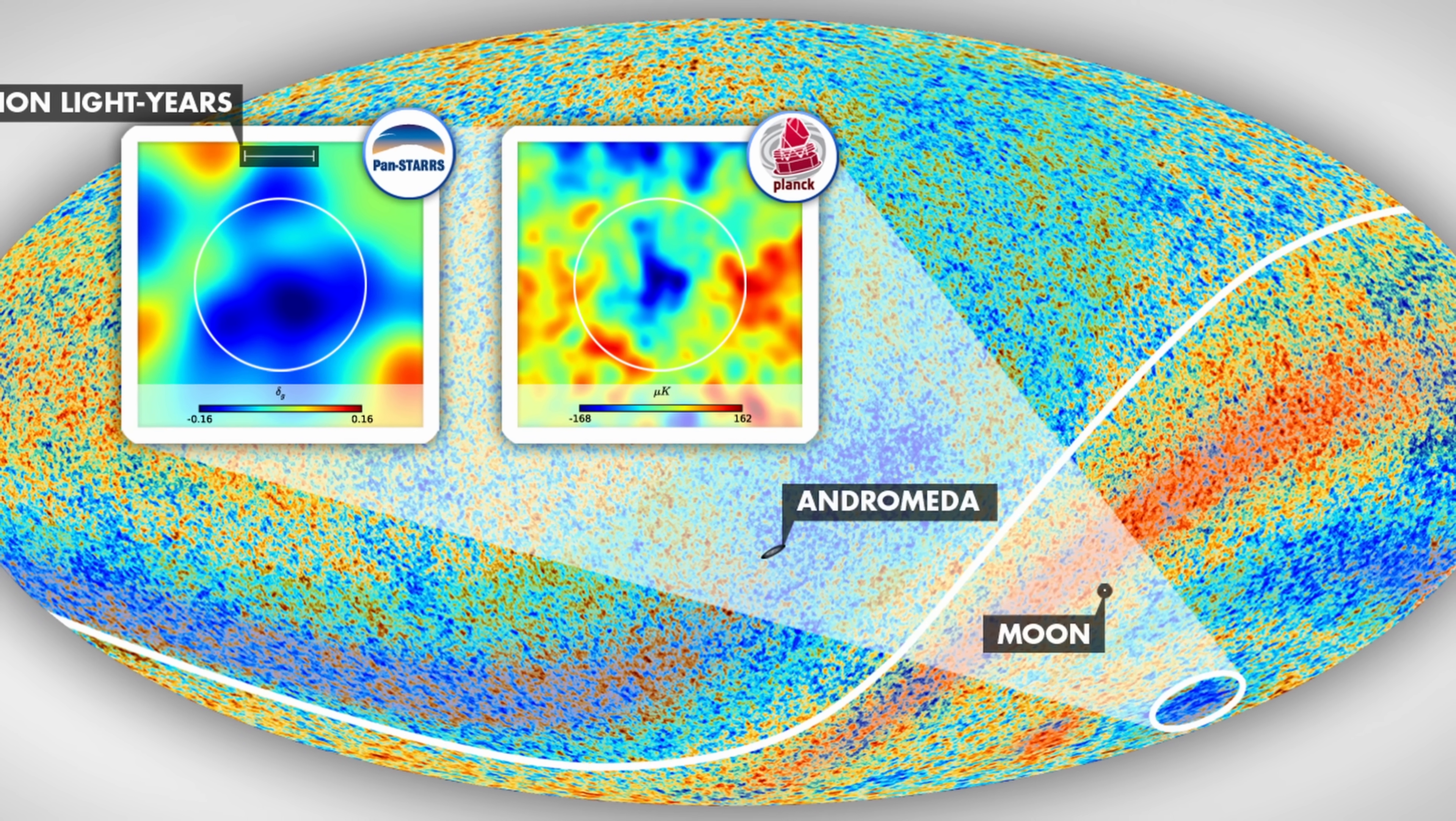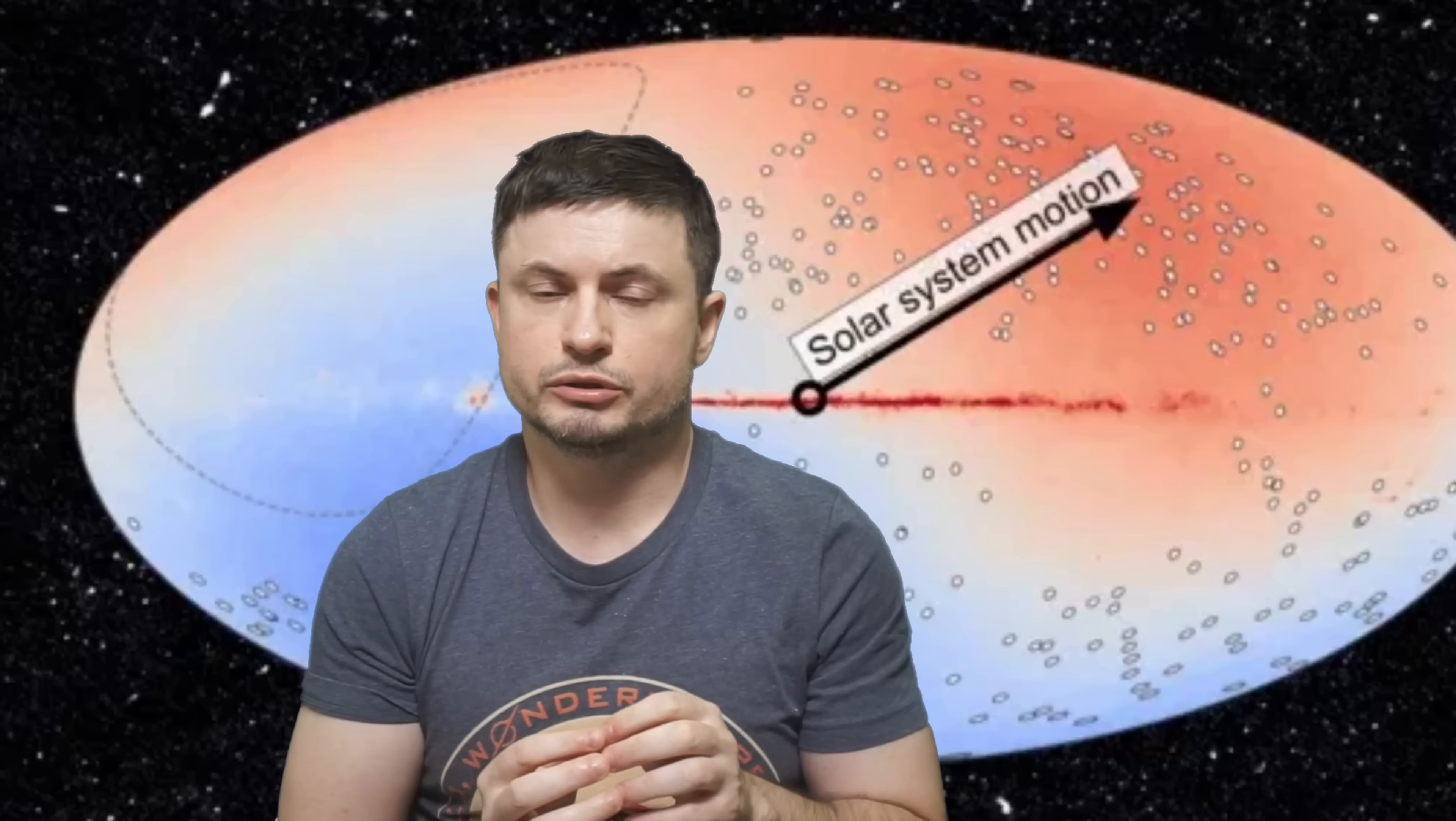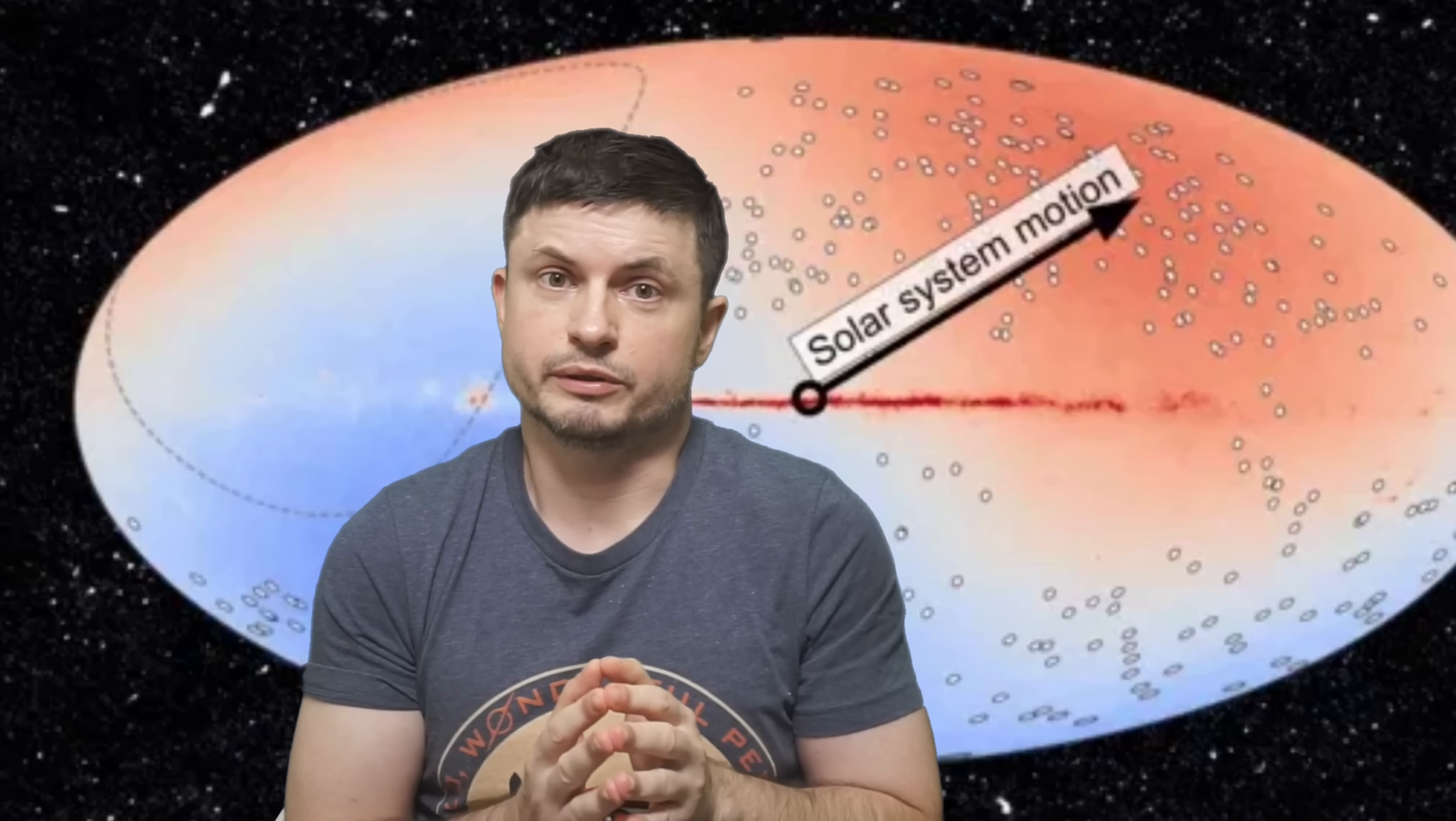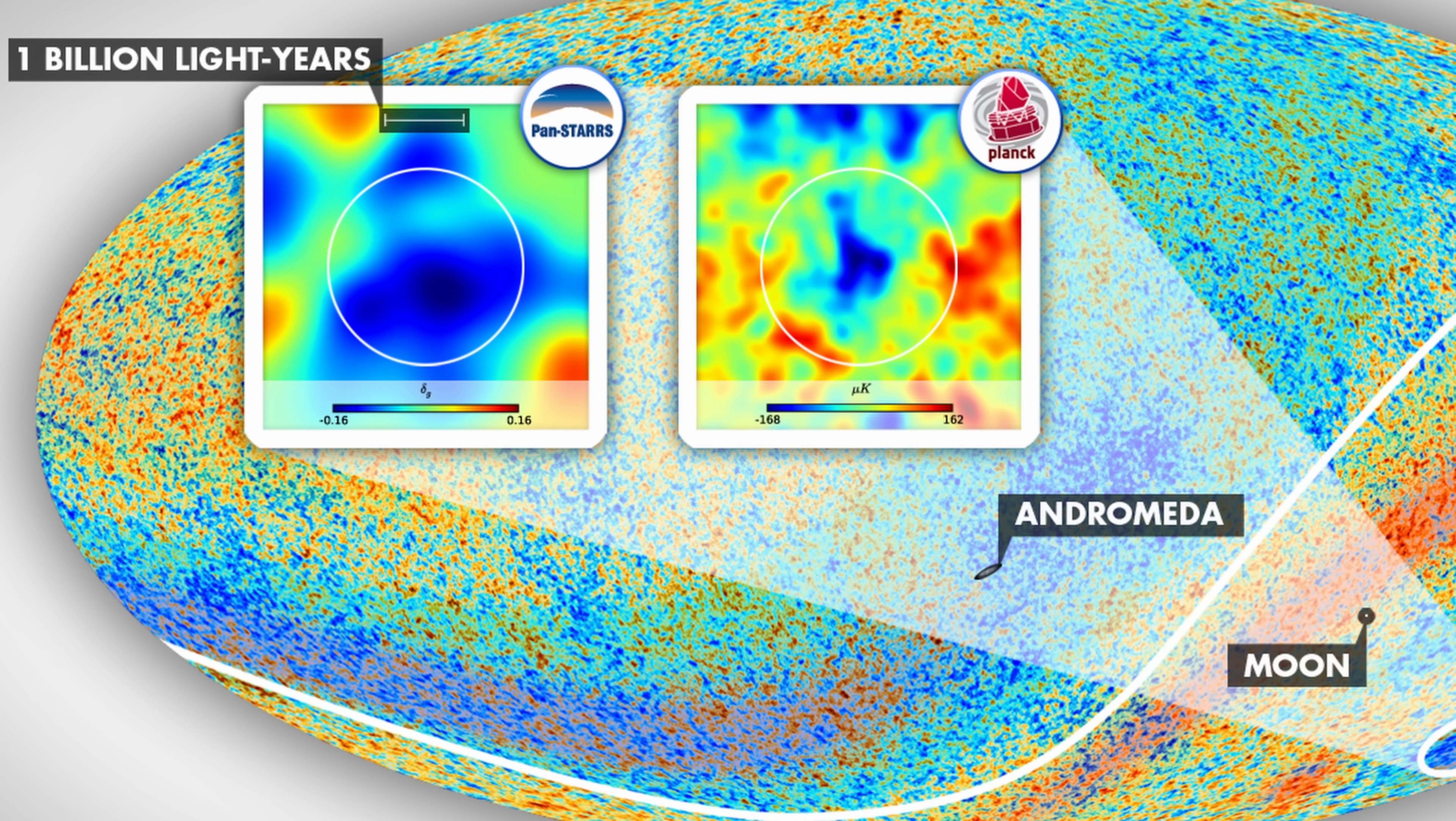This also sort of contradicts some of the observations from the most mind-blowing map we've ever created, the cosmic microwave background. So let's discuss some of these recent studies and what all of this means, but actually let's start with some of the previous discoveries and previous observations, specifically with that CMB, the earliest light in the universe.